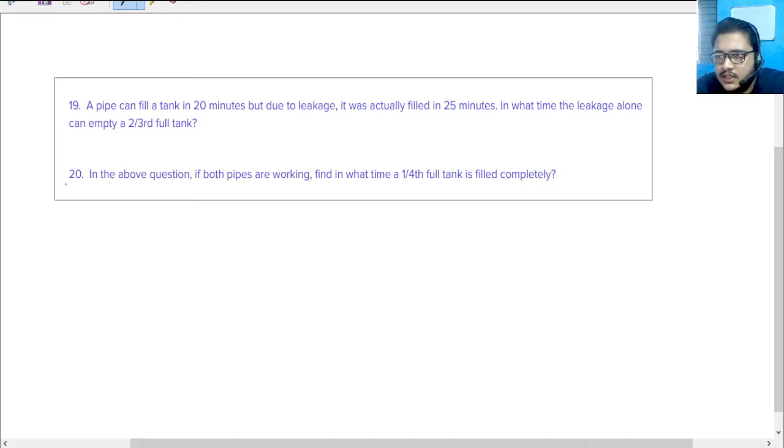Okay, so this is the next one. It says in the above question, if both pipes are working, find the time in which one-fourth of the tank is filled completely. Understand that when the inlet was working, the rate was 5 liters per minute. Inlet plus outlet is 4 liters per minute.